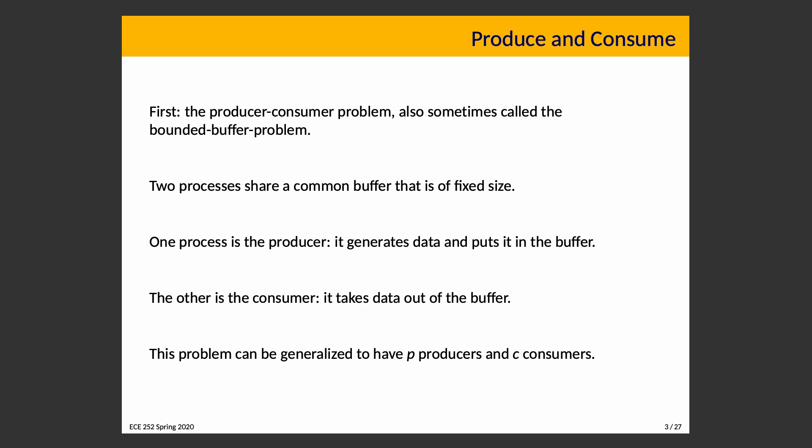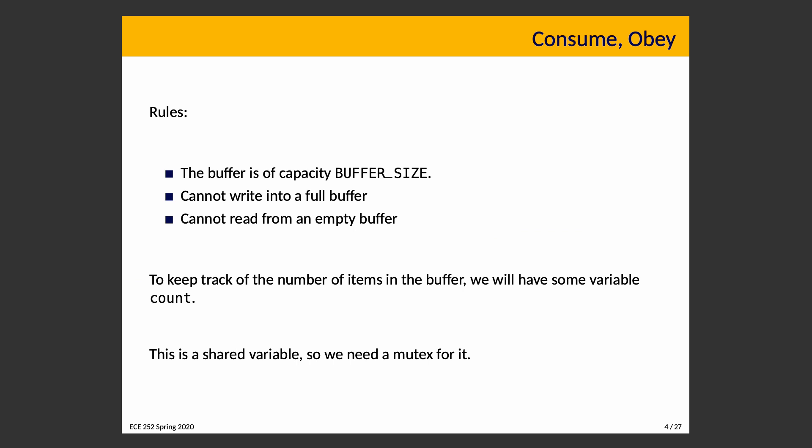Our problem can be generalized to have an arbitrary number of producers and consumers, and in real life most situations will resemble that. But for now, just to keep it simple, we're going to start with just one of each, and then scale it up. So, there are rules. We have a buffer of fixed size — we'll use a constant called buffer_size. We cannot write into a full buffer, so there's no overwriting. If the buffer is full, a producer has to wait until there is some space.